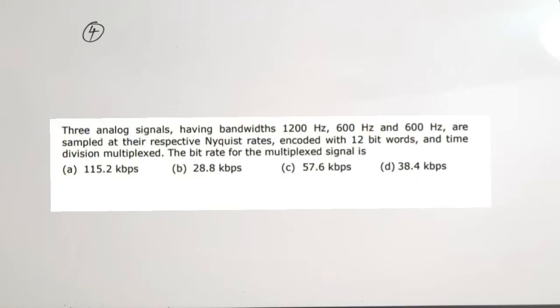The next question is from the sampling theorem. Three analog signals have bandwidths of 1200 Hz, 600 Hz, and 600 Hz. They are sampled at their respective Nyquist rates — twice the bandwidth — encoded with 12-bit words, and time-division multiplexed. We need to find the bit rate of the multiplexed signal.